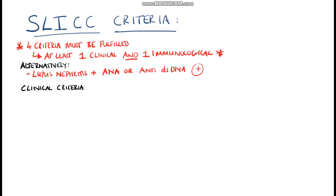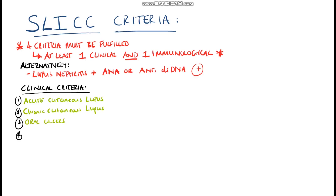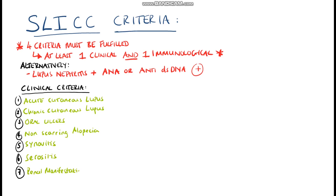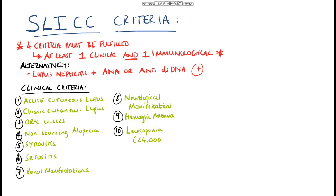The clinical criteria include acute cutaneous lupus or chronic cutaneous lupus, oral ulcers, non-scarring alopecia — which is diffuse thinning or hair fragility with visible broken hairs — and synovitis involving two or more joints characterized by swelling or effusion, or tenderness in two or more joints and 30 minutes or more of morning stiffness. Next would be serositis — the pleuritis or pericarditis mentioned — followed by renal manifestations, neurological manifestations, hemolytic anemia, leukopenia, or thrombocytopenia.